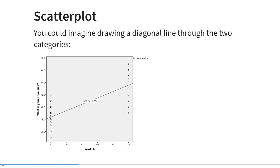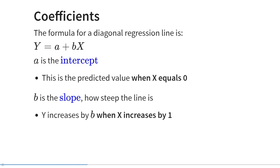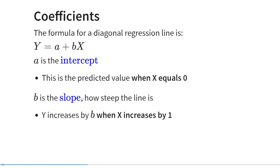You could imagine drawing a diagonal line through the means of these two groups. That line goes right through the middle of each group and continues between them and beyond. The formula for a diagonal regression line is y equals a plus bx, where a and b are coefficients. Specifically, a is the intercept — the predicted value when predictor x equals 0. And b is the slope, which tells us how steep the line is and that y increases by b points when x increases by one point.